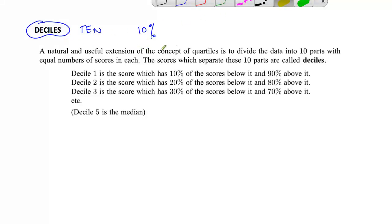A natural and useful extension of the concept of quartiles, which is 25%, remember, is to divide the data into not four parts but 10 parts, with equal numbers of scores in each. So it's an equal division of the scores, and these 10 parts are actually called the deciles.